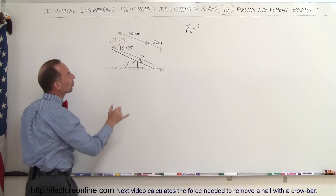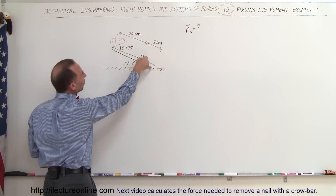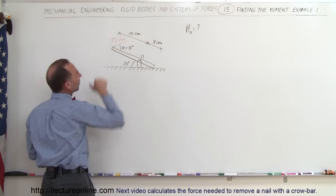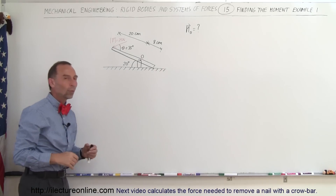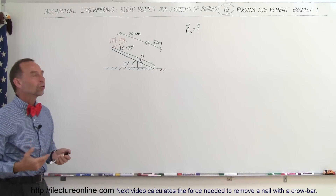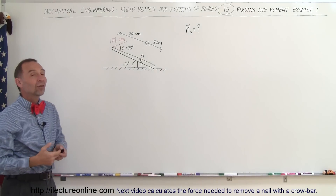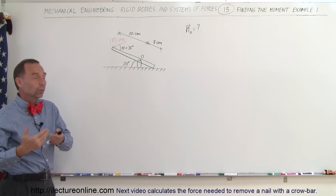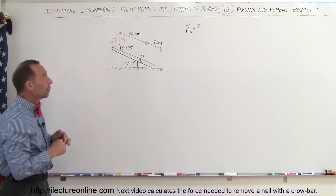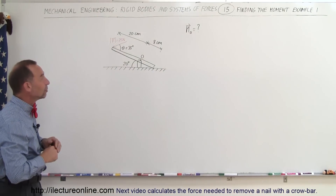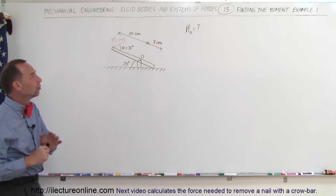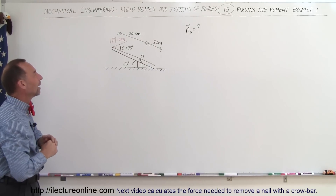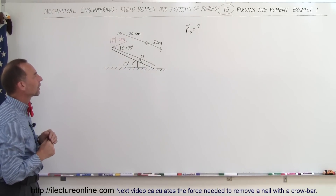Also notice that this distance here is 8 centimeters and that distance there is 20 centimeters. We want to find the magnitude of the moment and the direction of the moment, and we'll find that in two different ways. Let me show you two different approaches on how to do that.